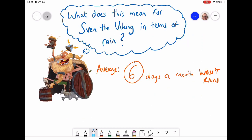So what does this actually mean when we look at this data set? What does it mean for Sven the Viking? He wants to go out and sit in his boat and catch fish without getting rained on. We've worked out that the mean amount of days in a month that it doesn't rain is six. But by looking at that data set, we can see that there was a lot of deviation from that mean.